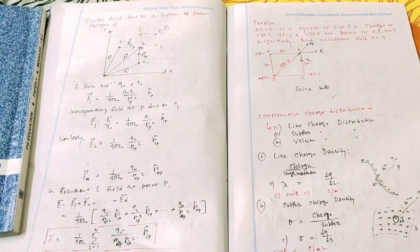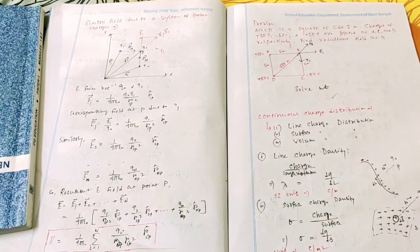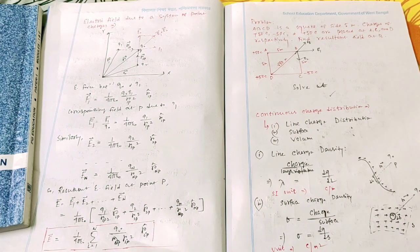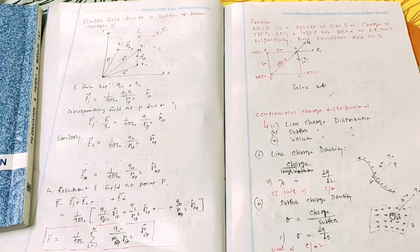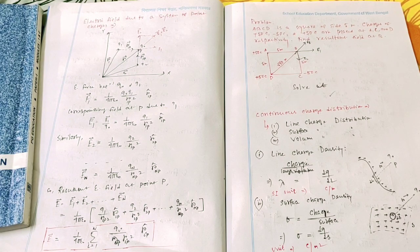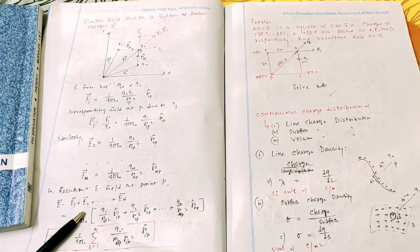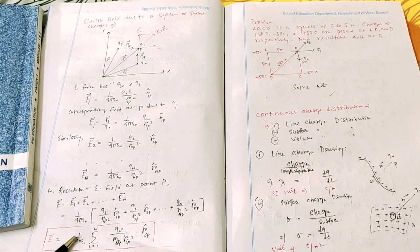Now we calculate the resultant electric field at point P due to Q1, Q2, Q3 up to Qn using the superposition principle. The superposition principle states that the electric field at any point due to a group of charges is equal to the vector sum of the electric fields produced by each charge individually at that point, when all other charges are assumed to be absent. The resultant electric field E equals E1 plus E2 plus up to En, and taking 1 over 4 pi epsilon naught as common.